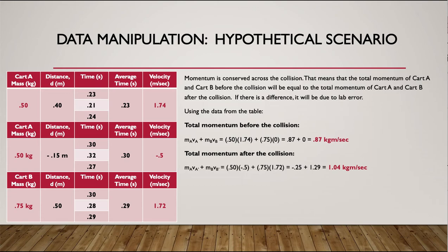So, for cart A, after the collision, it has a momentum of negative 0.25. Cart B, after the collision, has a momentum of 1.29. I combine those to get 1.04 kilogram meters per second.